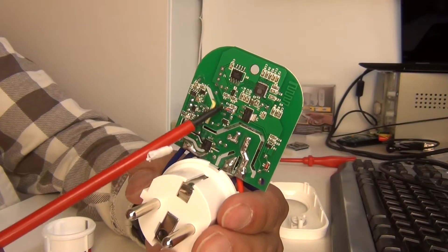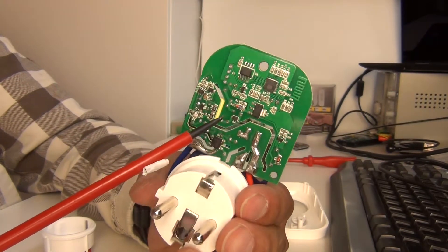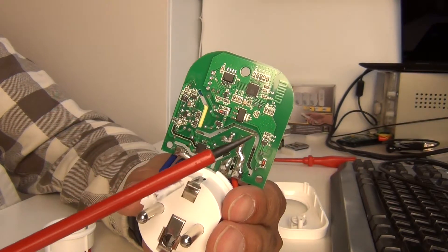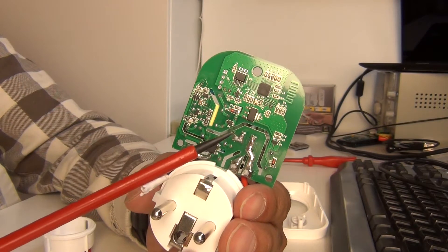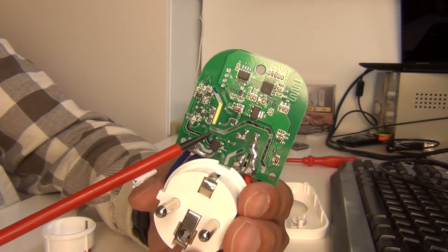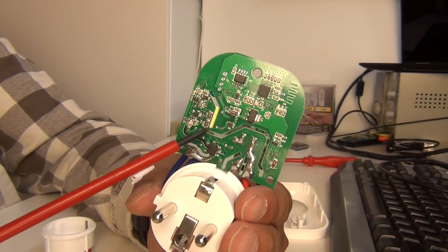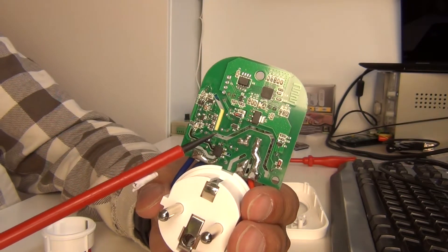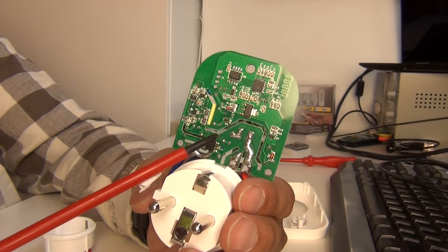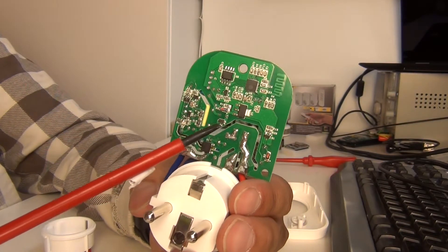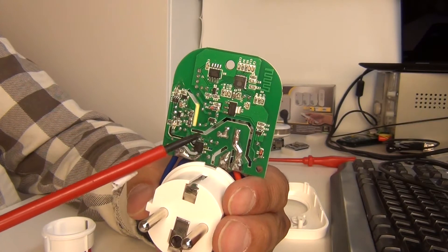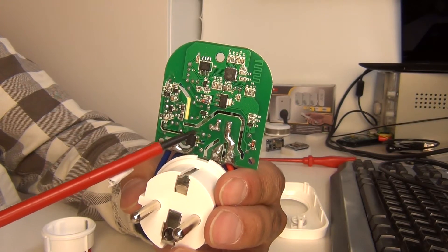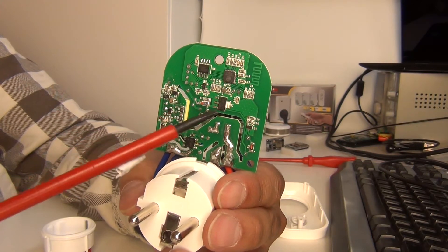What's also nice to see is that they have placed these cutouts over here, and that's actually quite good because I wouldn't have expected to have these kinds of components inside this device because of the price. But making these cutouts makes the device a little bit safer because there is less chance that a creepage current from this side of the PCB can go to the low voltage part.